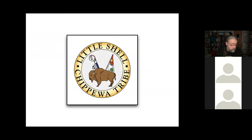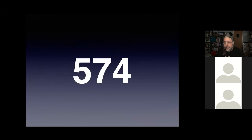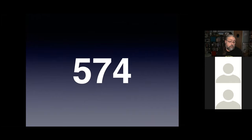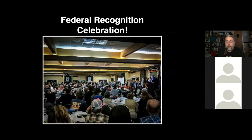This is our official symbol — what shows up on our flag. December 2019, we became the 574th federally recognized tribe after over 156 years. Going back to the Old Crossing Treaty of 1863 is kind of where things really started to come apart for us in our relationship with the federal government. Chief Little Shell at the time said he was never going to sign another treaty with the federal government because he felt they were always dealing unfairly with our people and with indigenous people across the continent.